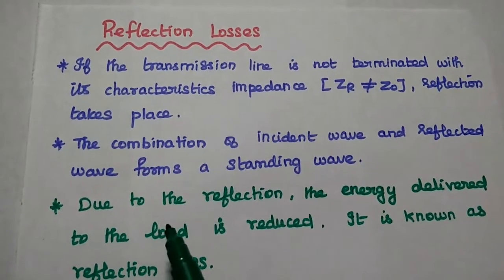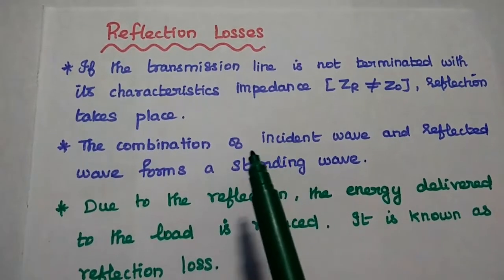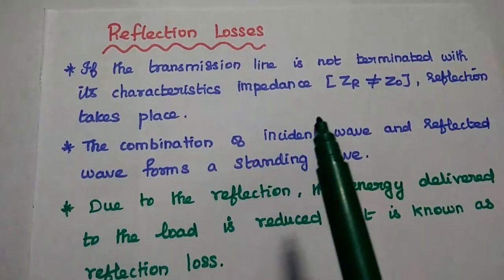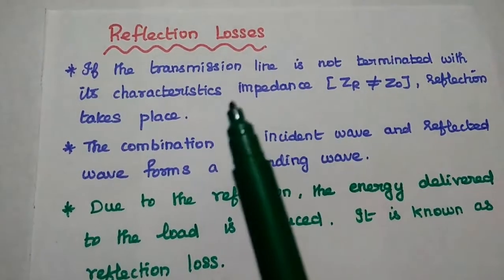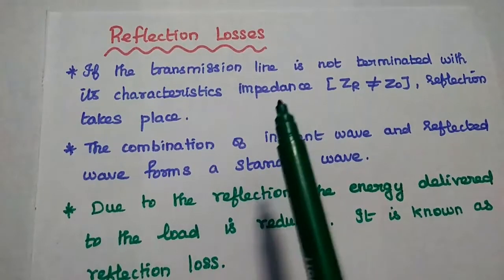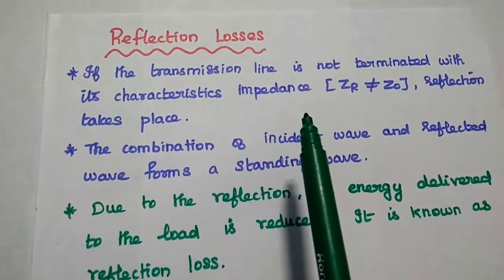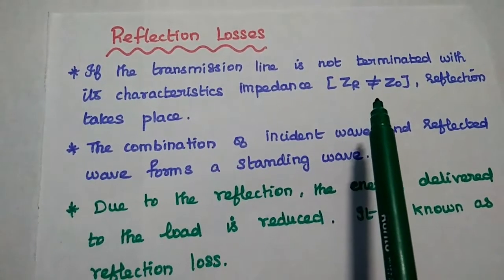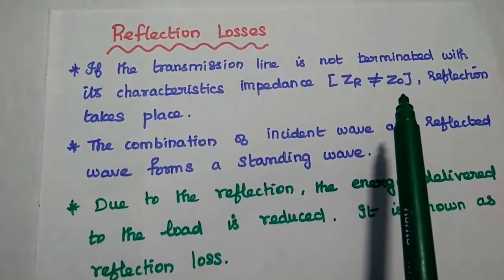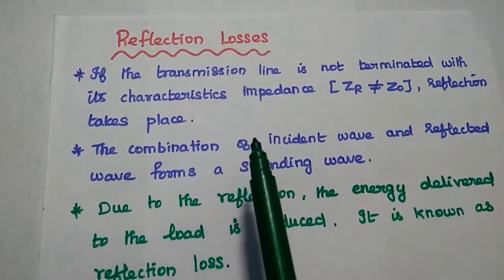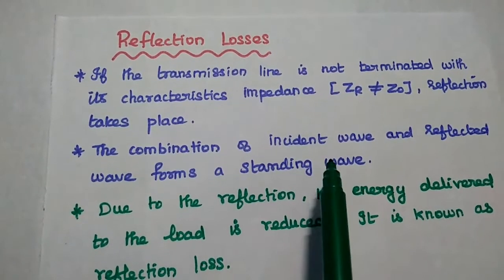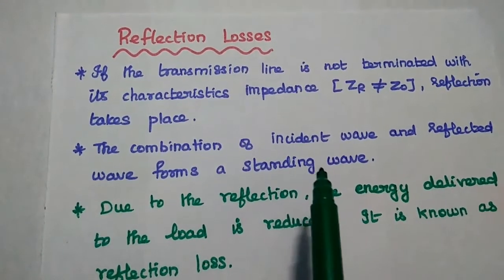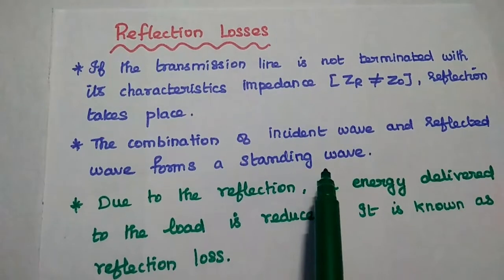Dear students, now we are going to discuss reflection losses occurred in zero dissipation lines at high frequency range. If the transmission line is not terminated with its characteristic impedance — that is, the receiving end impedance ZR is not equal to the characteristic impedance — then reflection takes place. The combination of the incident wave and the reflected wave forms standing waves in the transmission line, which is an unwanted condition.